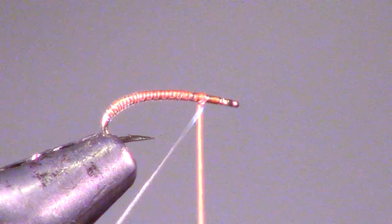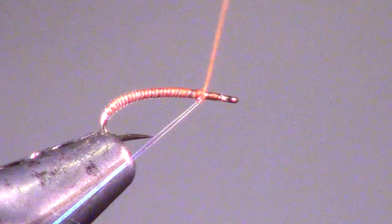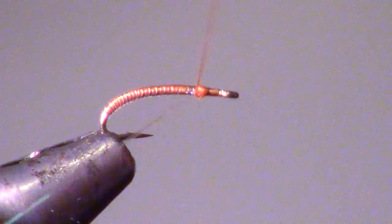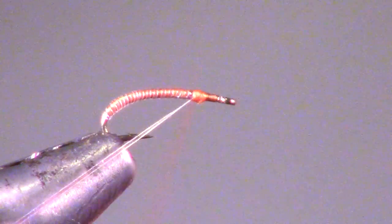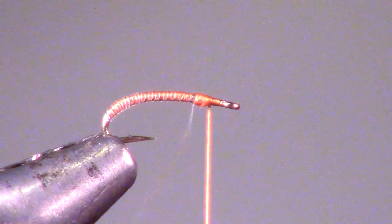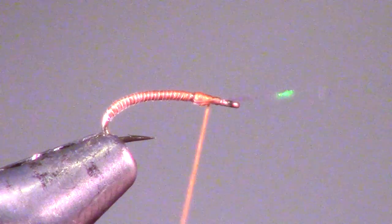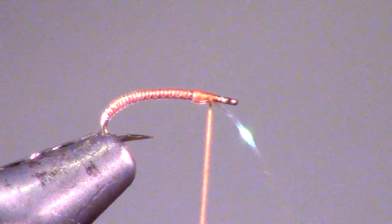Then pull your bobbin off the holder and capture the flashaboo. Unlike many other midges, building bulk in the head is not that bad. So I like securing my flashaboo with multiple wraps to really make sure it's in place.